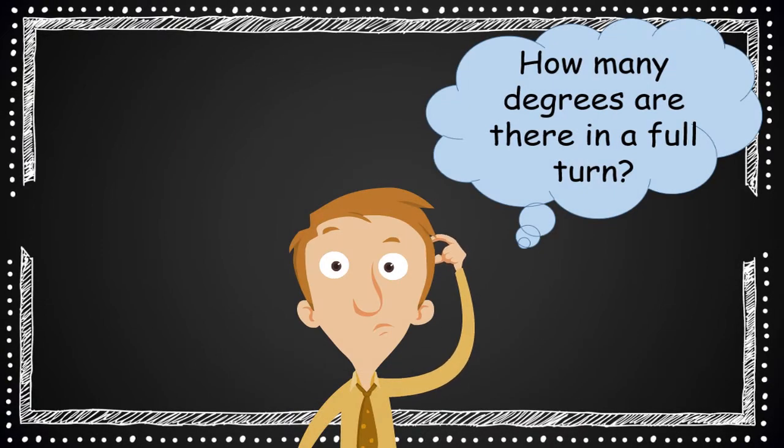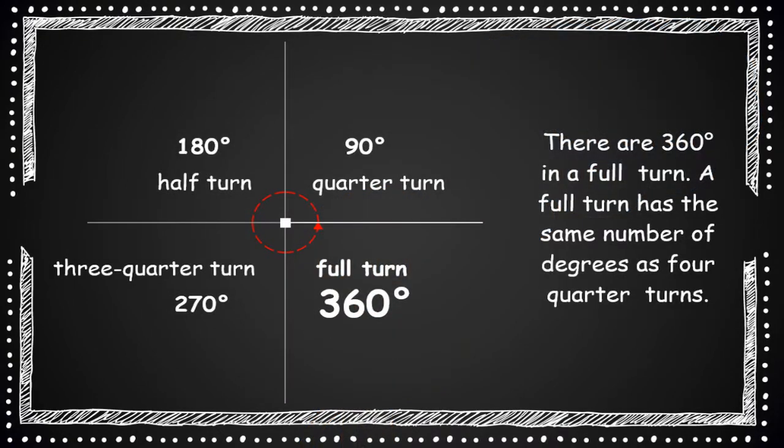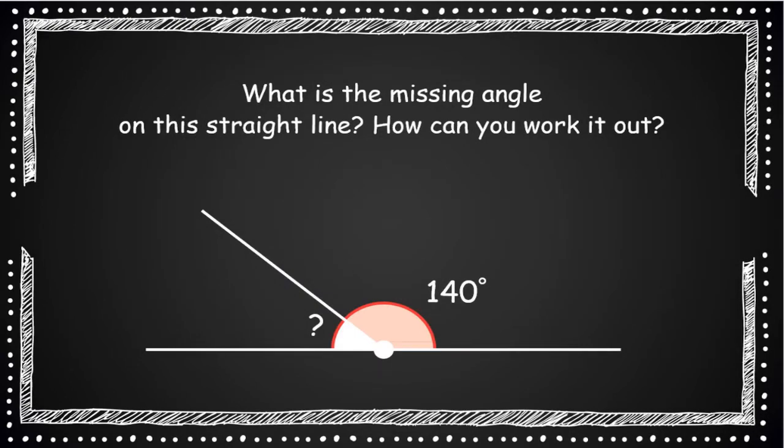Now this isn't a trick question, just think, how many degrees are there in a full turn then? Pause the video if you need to, to write down your answer. Ok what did you get? 360 degrees in a full turn. It's the same amount of degrees as 4 quarter turns or 4 right angles.